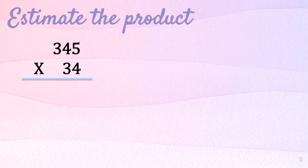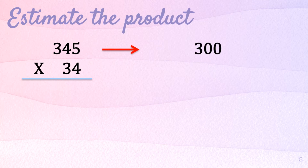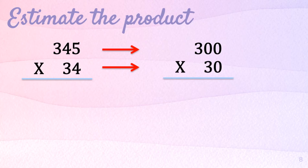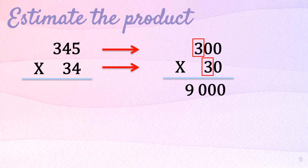How about this one? Let us try. Estimate the product of 345 times 34. So let us first round the multiplicand to the nearest hundreds place, so that is 300. The multiplier, round to the nearest tens, that is 30. Next, multiply all the rounded factors. Multiply the non-zero numbers: 3 times 3 equals 9. Then count the number of zeros and the final answer is 9,000.